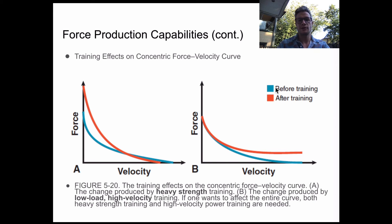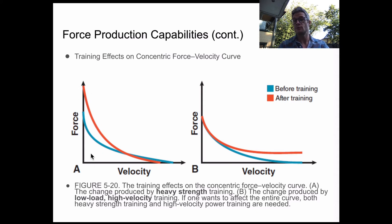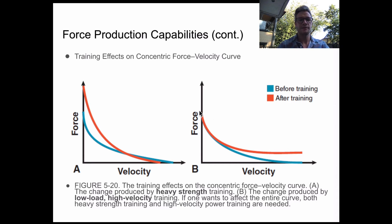We're going to look at before training — just this blue line here; it's the same on both A and B. If we undergo a purely heavy strength training regime, we'll find that our force production is quite high at slow velocities: when we're moving at a slower speed, we can produce more force. If we were to undergo a low load — lower resistance — but increase the velocity at which we're moving that resistance, we'll notice that overall force production isn't as high after training.